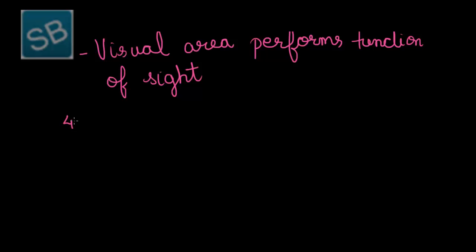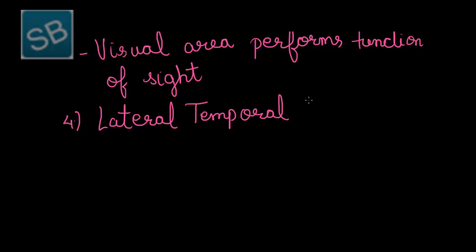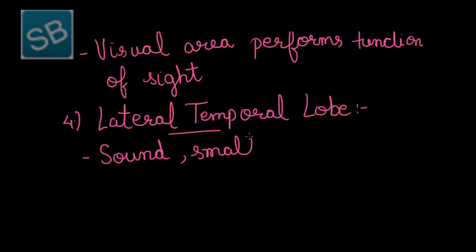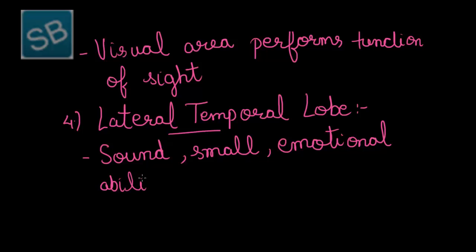The fourth and last lobe is the lateral temporal lobe. This lobe is associated with functions of other senses like sound and smell, and it increases emotional ability and thinking. This covers all about the lobes present within the cerebral hemisphere.